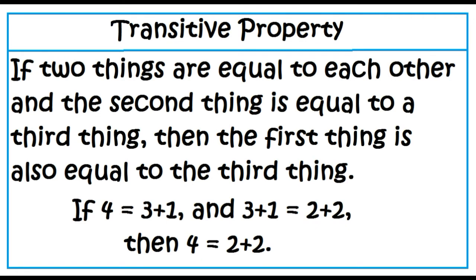Transitive property of equality: if two things are equal to each other and the second thing is equal to a third thing, then the first thing is also equal to the third thing. For example, if 4 equals 3 plus 1 and 3 plus 1 equals 2 plus 2, then 4 equals 2 plus 2.